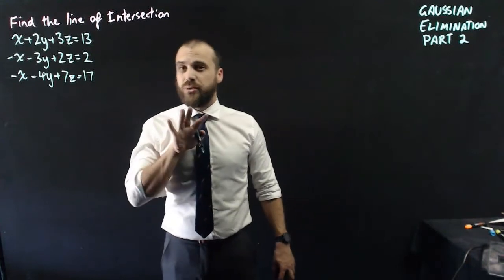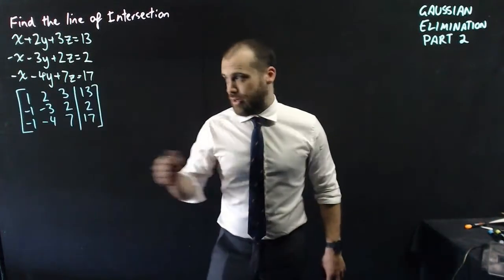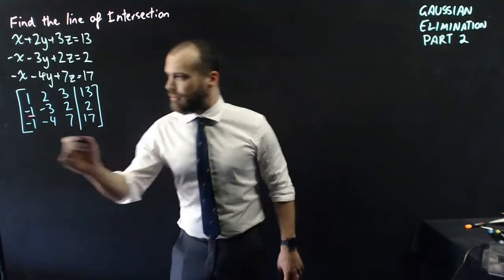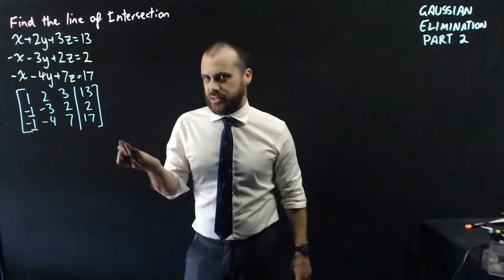Now my first step is going to be to put it into an augmented matrix. So now that I've done that, I want to turn this element into a zero. But while I'm at it, I might also turn this element into a zero, because that's my next step.